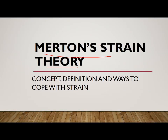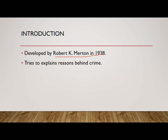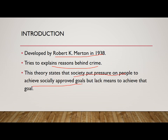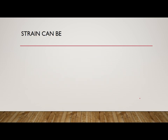Today the topic of discussion is Merton's Strain Theory. We are going to discuss its concept, definition, and ways to cope with strain. This theory was developed by Robert King Merton in 1938, an American sociologist, who was trying to explain the reasons behind crime — why people commit crime or are motivated to engage in criminal behavior. The theory states that society puts pressure on people to achieve socially approved goals but they lack the means to achieve those goals, which creates a strain on the individual and leads them toward crime.